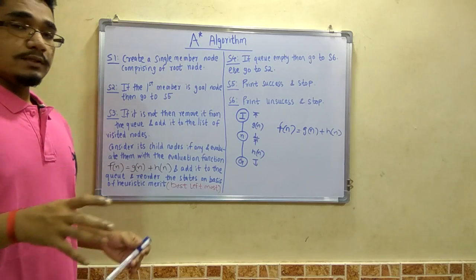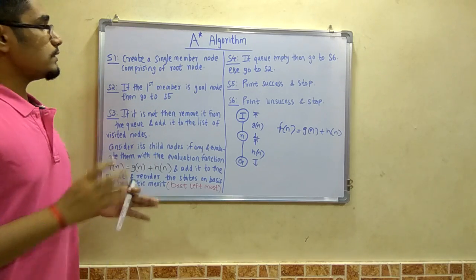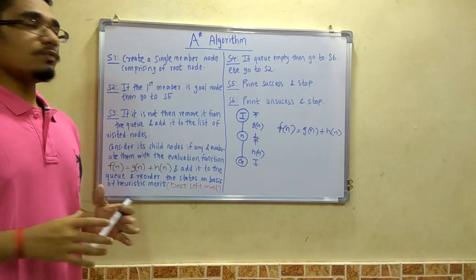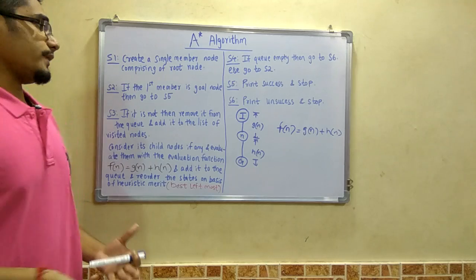First, we will create a single member node comprising of the root node. That is, a queue will be there and in that queue we will incorporate the root node from the tree.